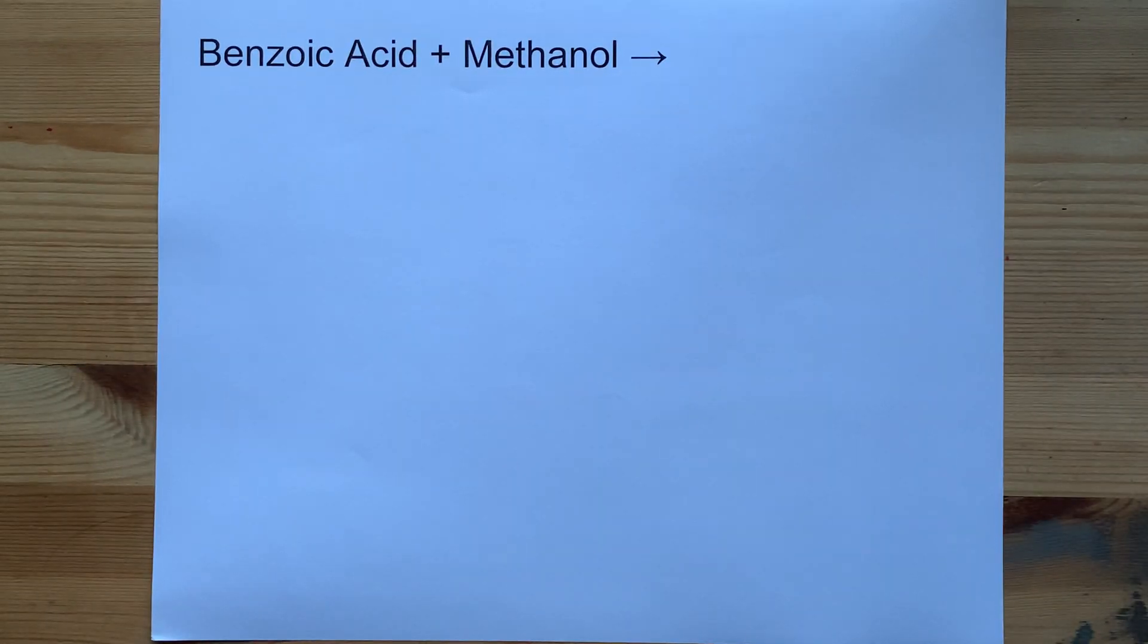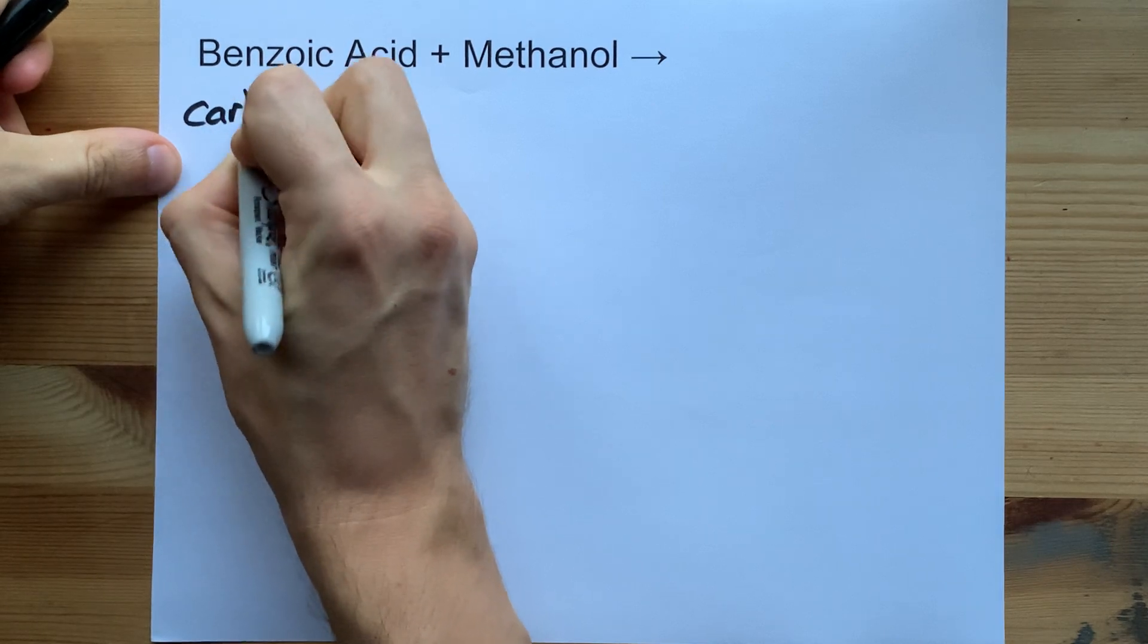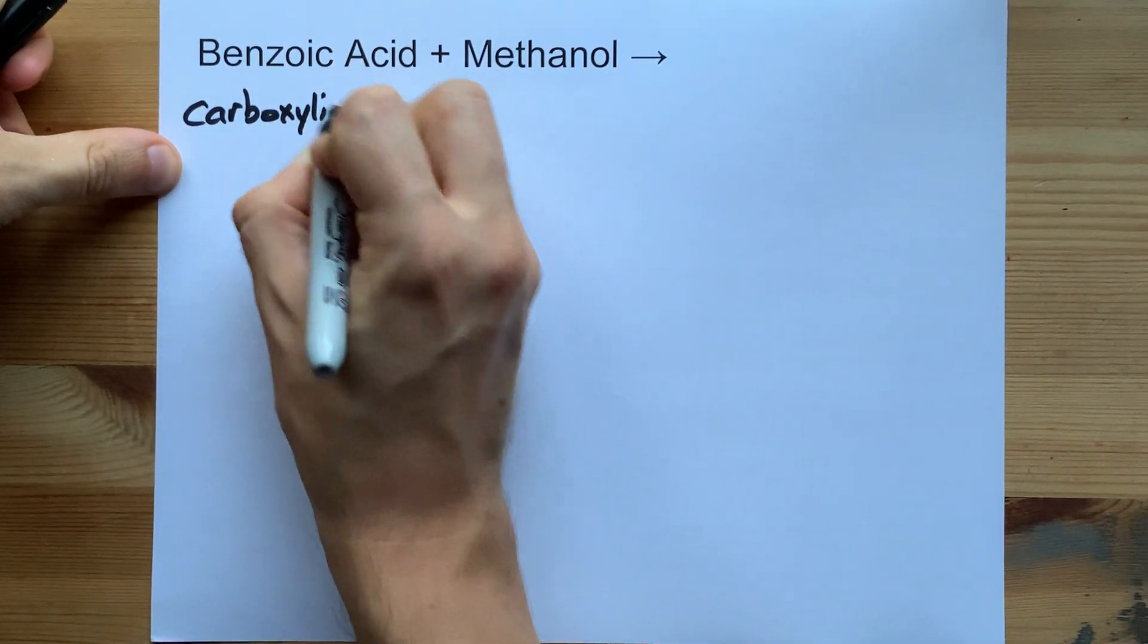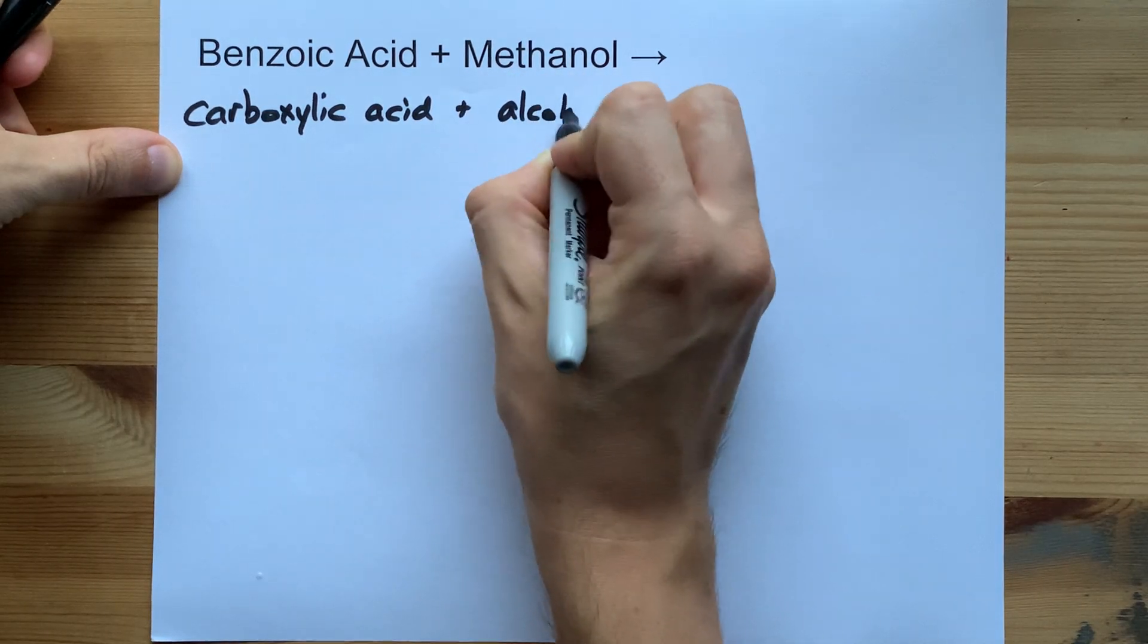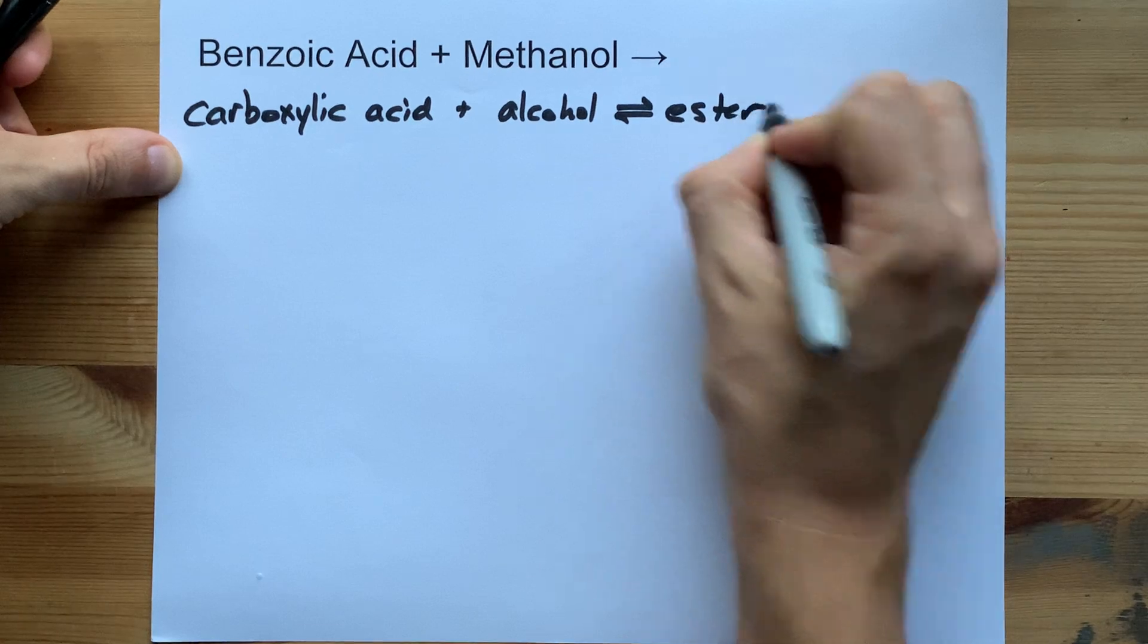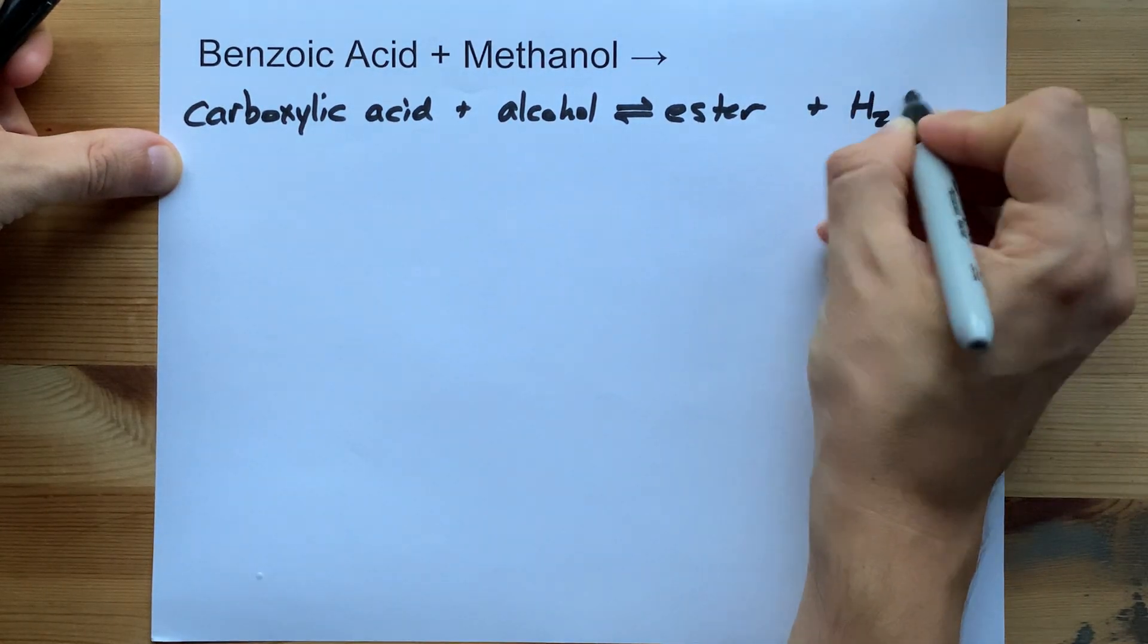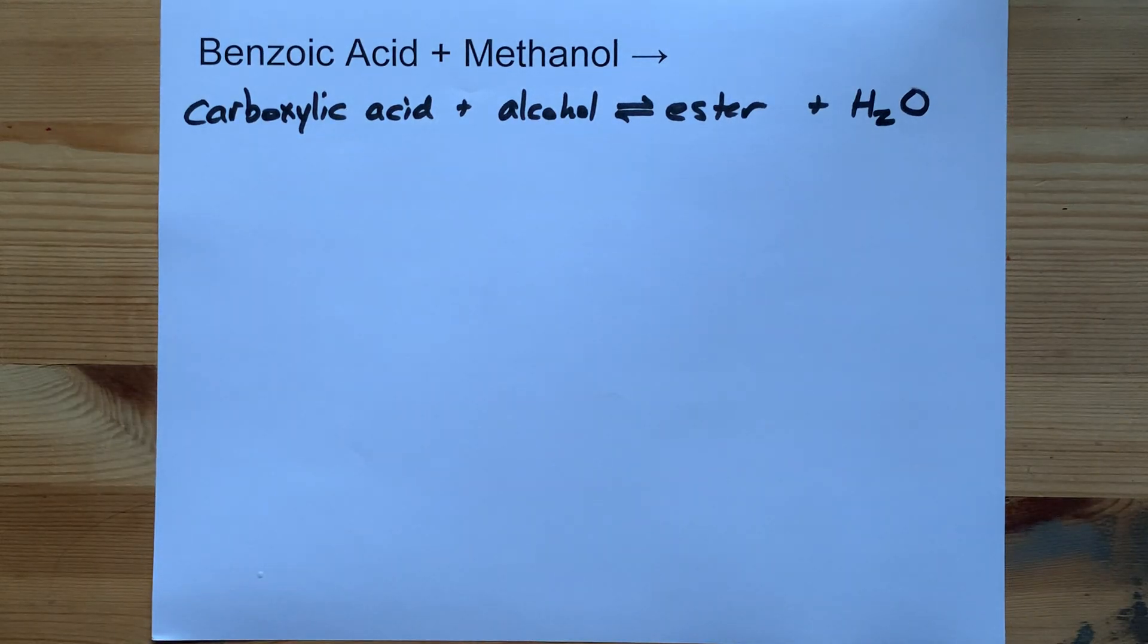When benzoic acid reacts with methanol, you're going to end up with an ester. And I want you to know that any time you react a carboxylic acid with an alcohol, you get an ester plus water as a byproduct. This is like one of those generic reactions that we want you to know.